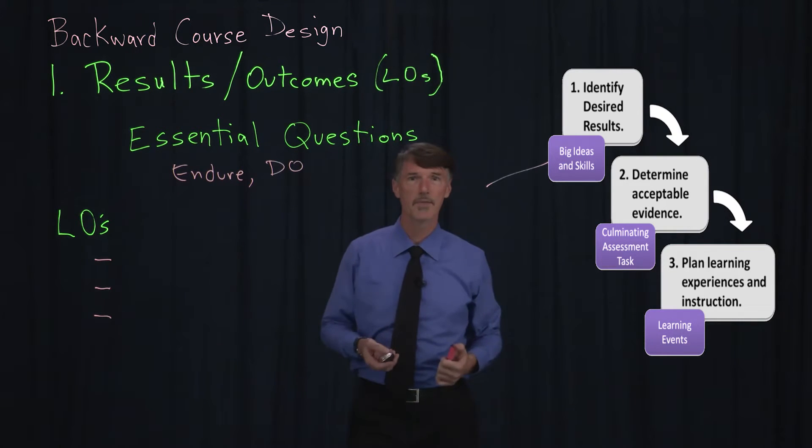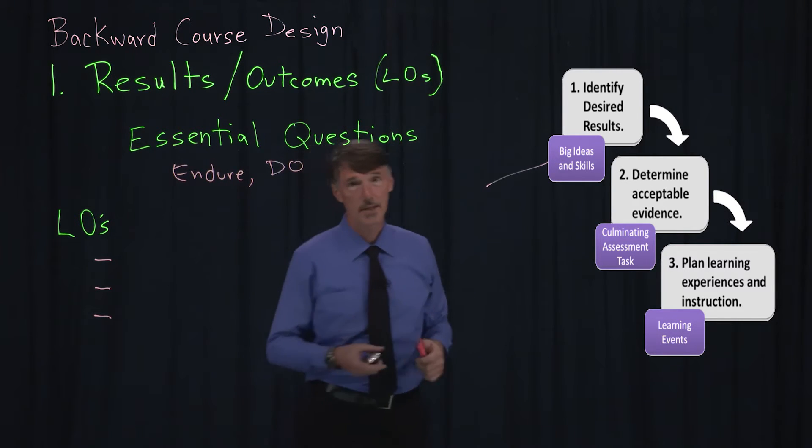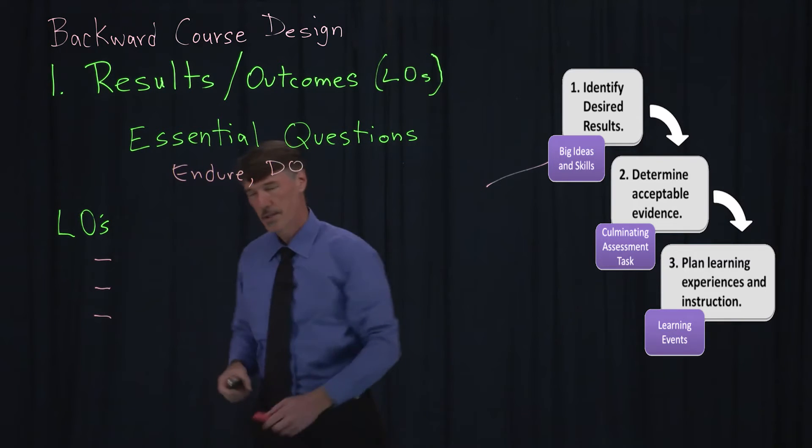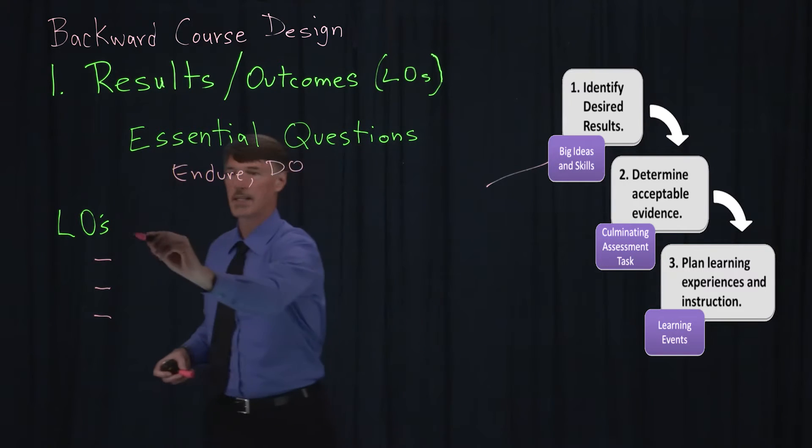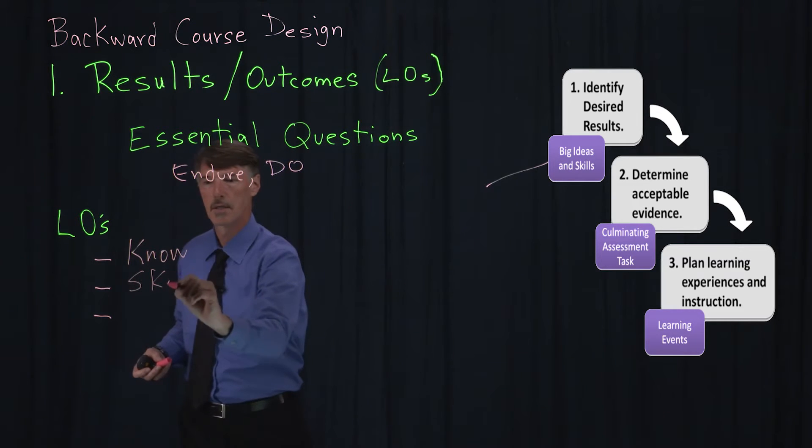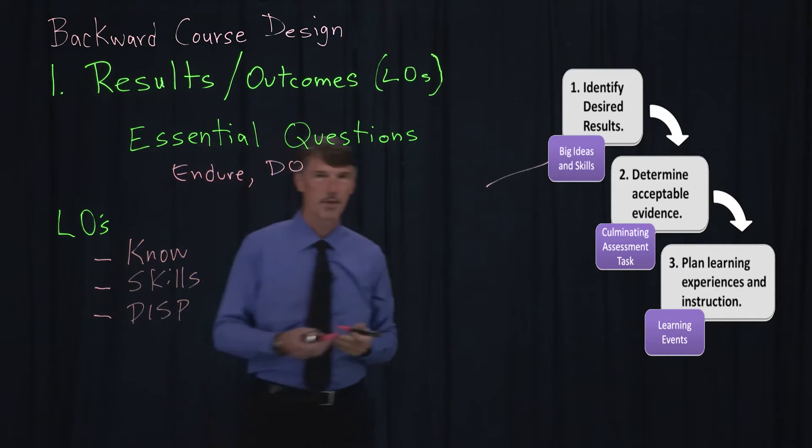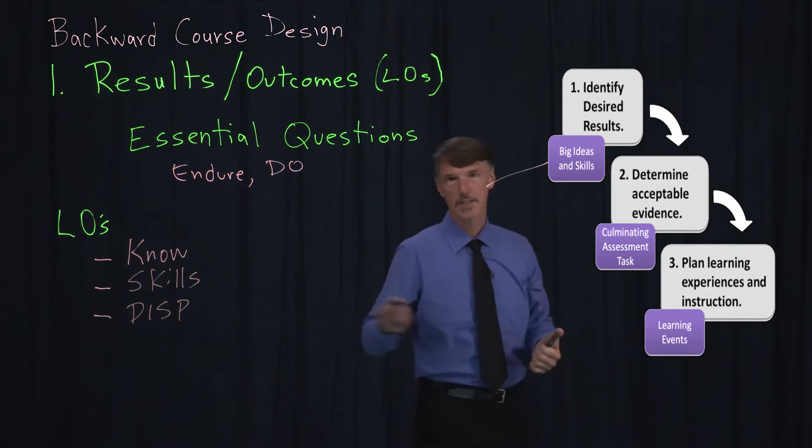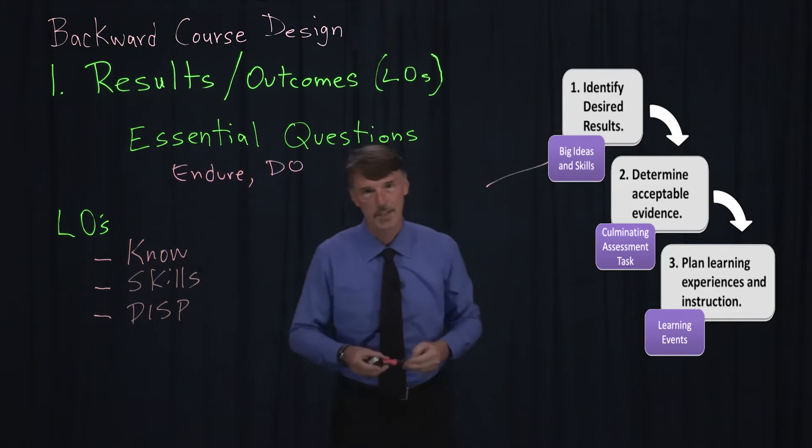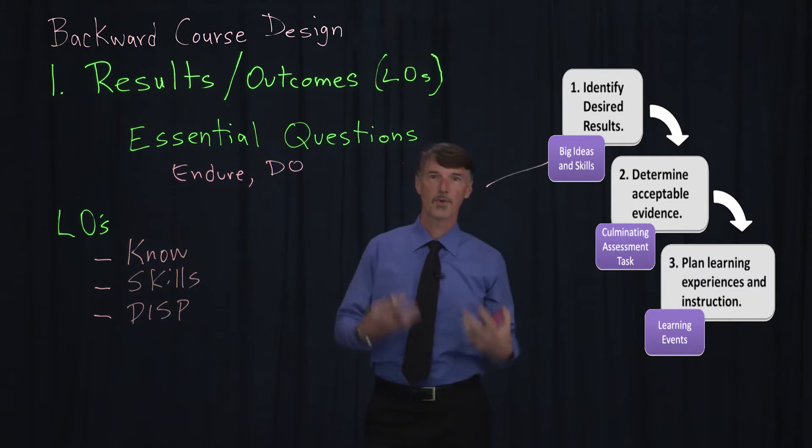So we're going to take these questions and develop these learning outcomes. Learning outcomes or LOs should be addressing knowledge. Secondly, they should also address some sort of skills. And then lastly, dispositions. The goal here is that we create these using a subject matter and an action that allows the students to perform these.